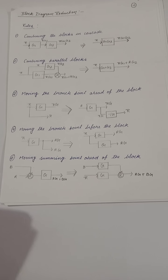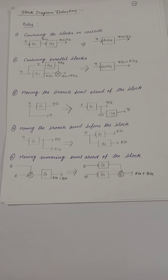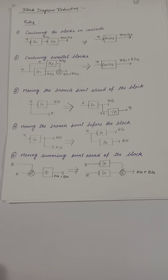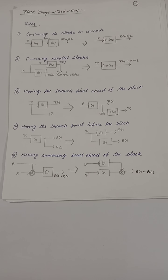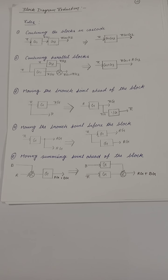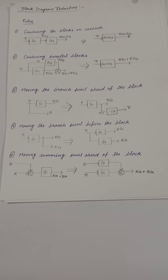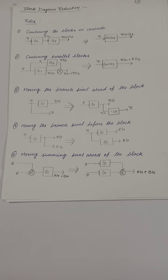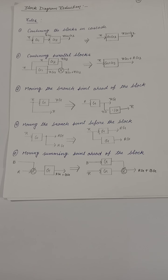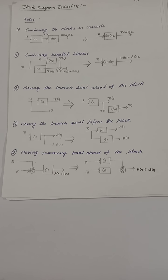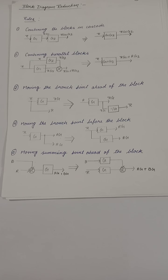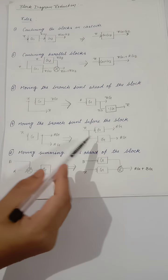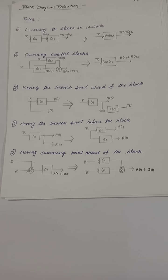Coming to the fourth rule: moving the branch point before the block. This is the reverse procedure of moving the branch point ahead of the block. You need to add an extra block in the moving path with the same gain. After reducing the block diagram, your input and output must be the same.